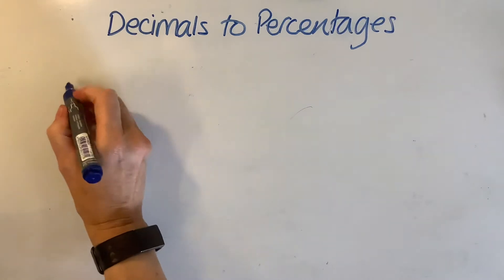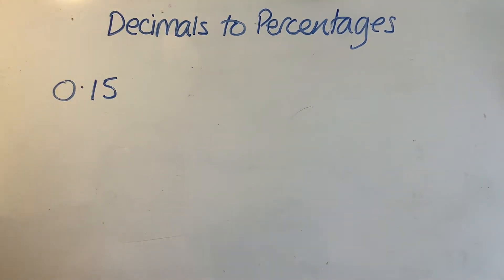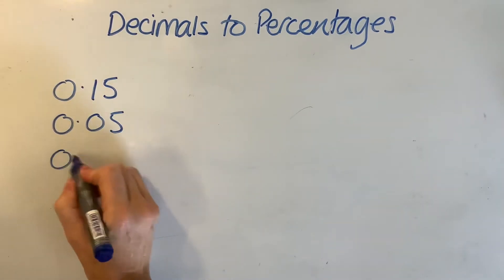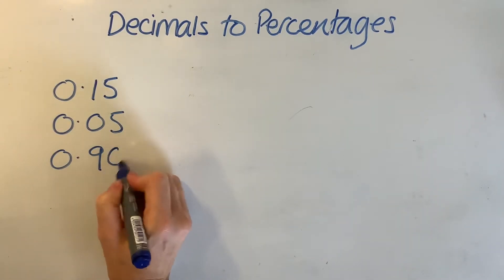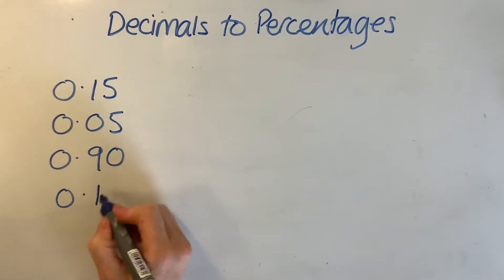So I'm going to get a couple of decimals here that I've thought of. So I'm going to have 0.15, I'll put 0.05, 0.90, 0.125, 0.25. Okay, so hopefully that's enough to demonstrate how to do this.